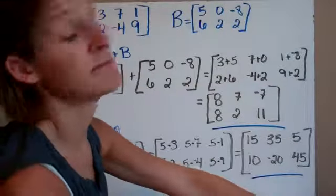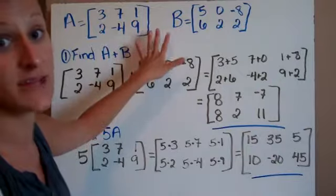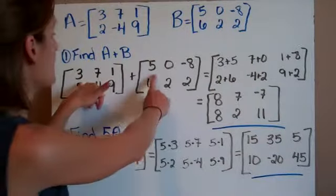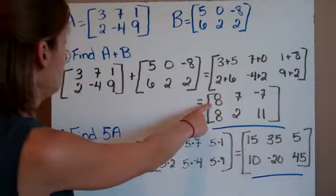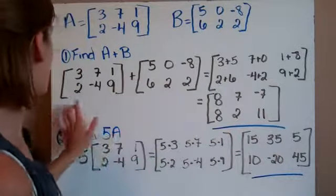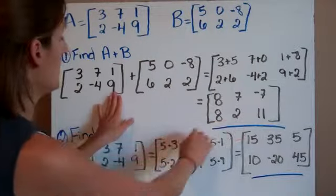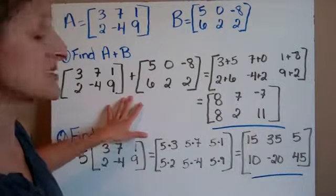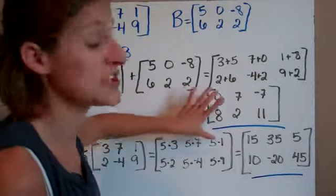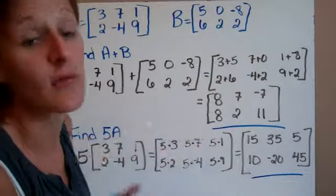Now let's look at some problems that you'll be asked to solve. If I give you two matrices, here's A, here's B, notice they are exactly the same size. The first problem, I want to add these two matrix together. So I do 3 plus 5 and you get 8, 7 plus 0 is 7, 1 plus negative 8 is negative 7. Then I go 2 plus 6 is 8, negative 4 plus 2 is 2, 9 plus 2 is 11. Notice these two sizes of matrices are the same size as my answer. I have to write this whole matrix out for it to be correct.